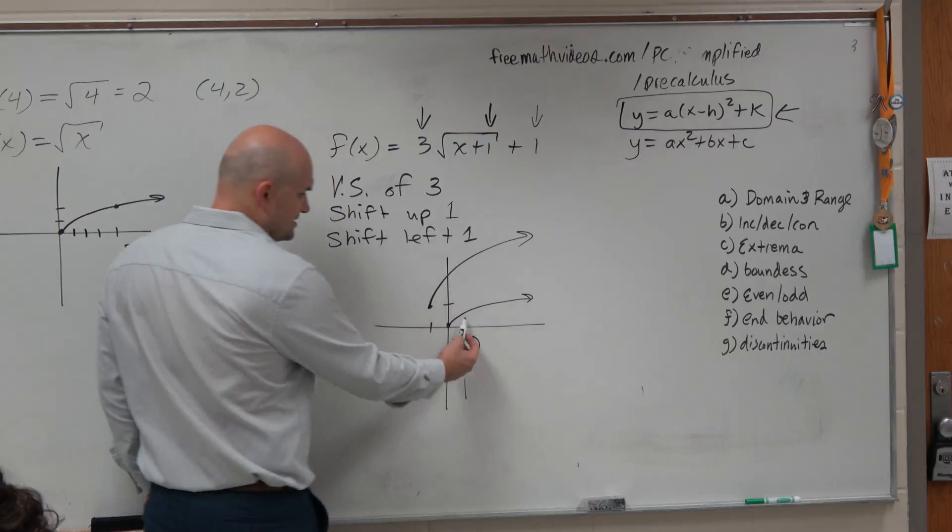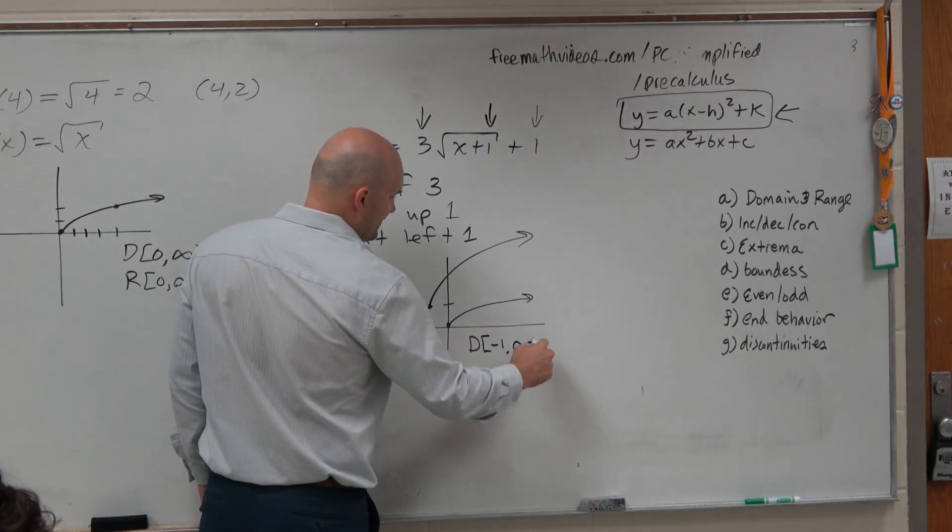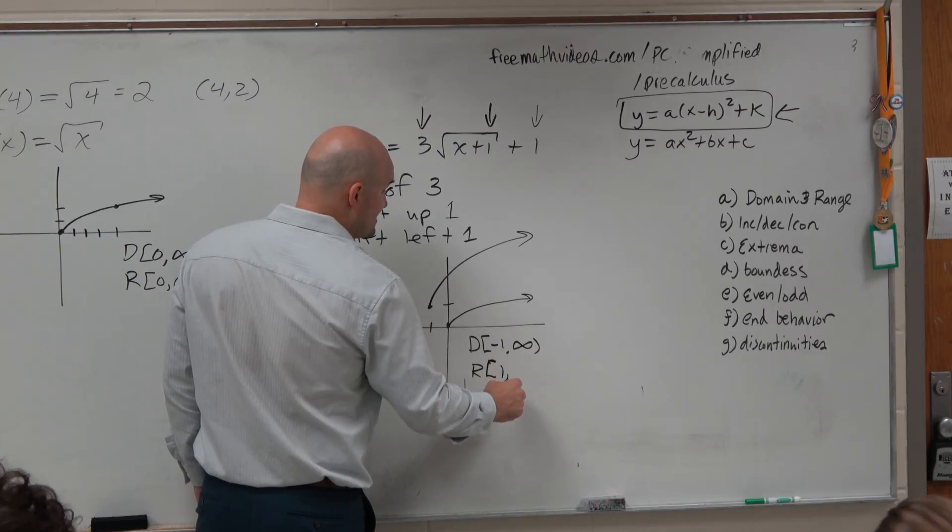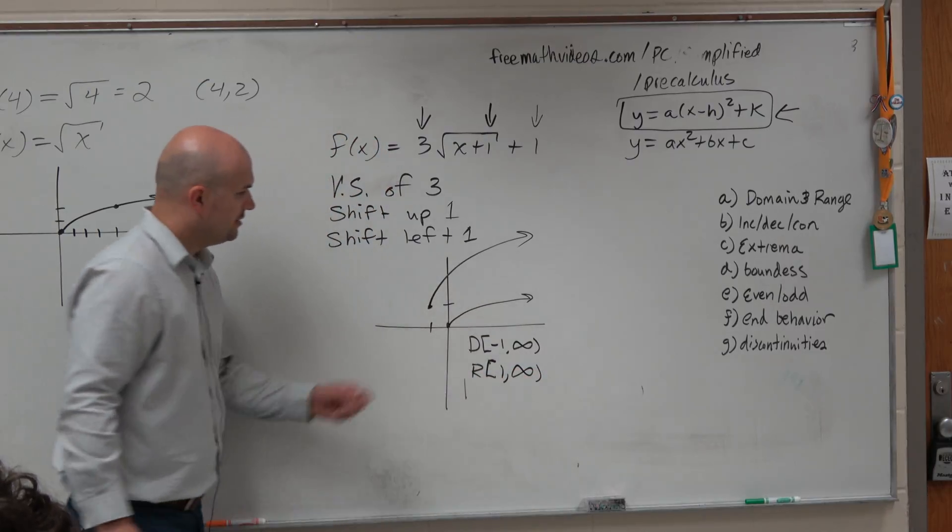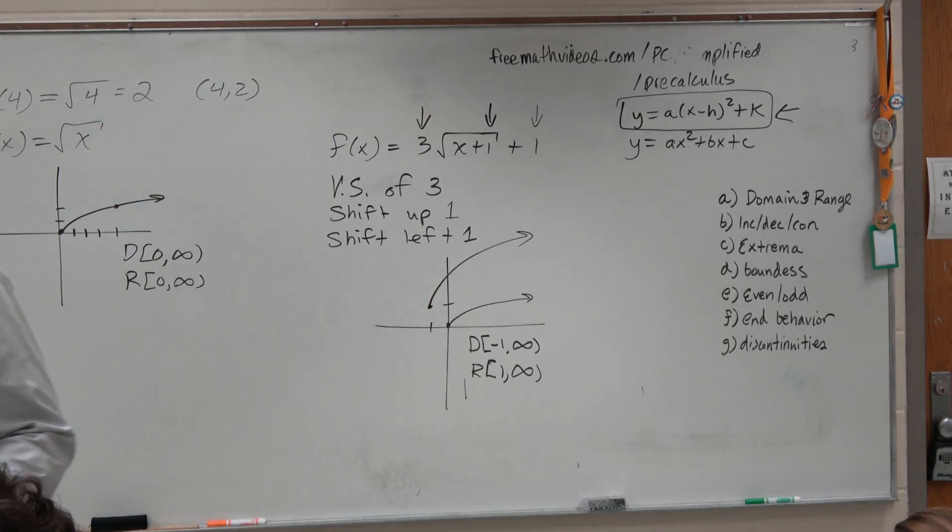The domain is now the graph goes to negative 1, infinity. And the range is positive 1 to infinity, right? Because it only goes as low as positive 1, in that sense. All right?